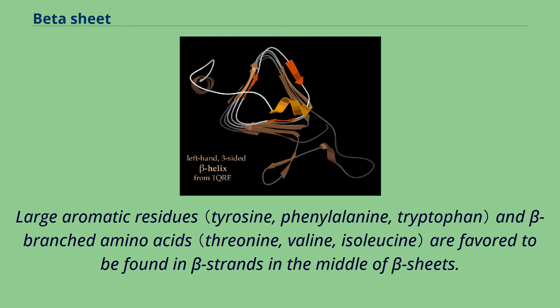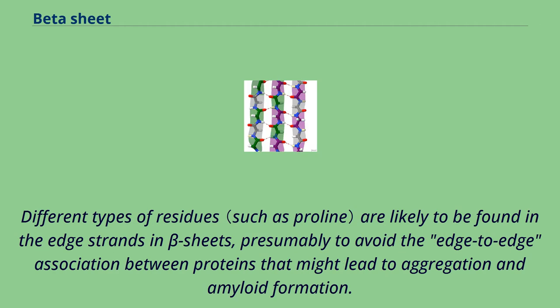Large aromatic residues and beta-branched amino acids are favored to be found in beta strands in the middle of beta sheets. Different types of residues are likely to be found in the edge strands in beta sheets, presumably to avoid the edge-to-edge association between proteins that might lead to aggregation and amyloid formation.